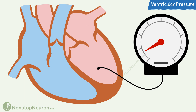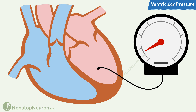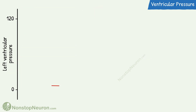This completes the entire cycle. The next cycle begins with atrial contraction, and this pumping causes a slight rise in ventricular pressure. Now let's see the changes in graphical form. Initially, atrial contraction causes a slight rise in pressure.